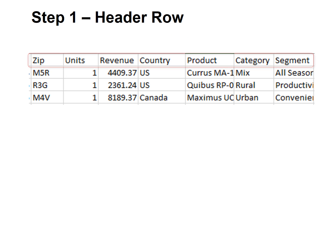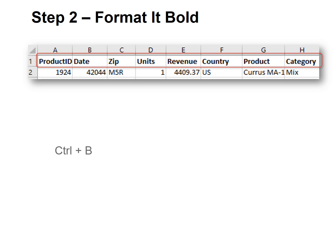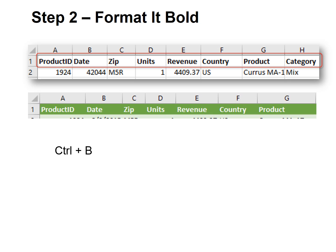Step 1 is you must have a header row. Above all your data and in the first row, make sure that you put in a header row that explains what goes in each column or field. Then format it so that Excel knows it's a header row. All you have to do is bold it. You can format it any other way you like, but you must bold it for Excel to understand that this is a header row.